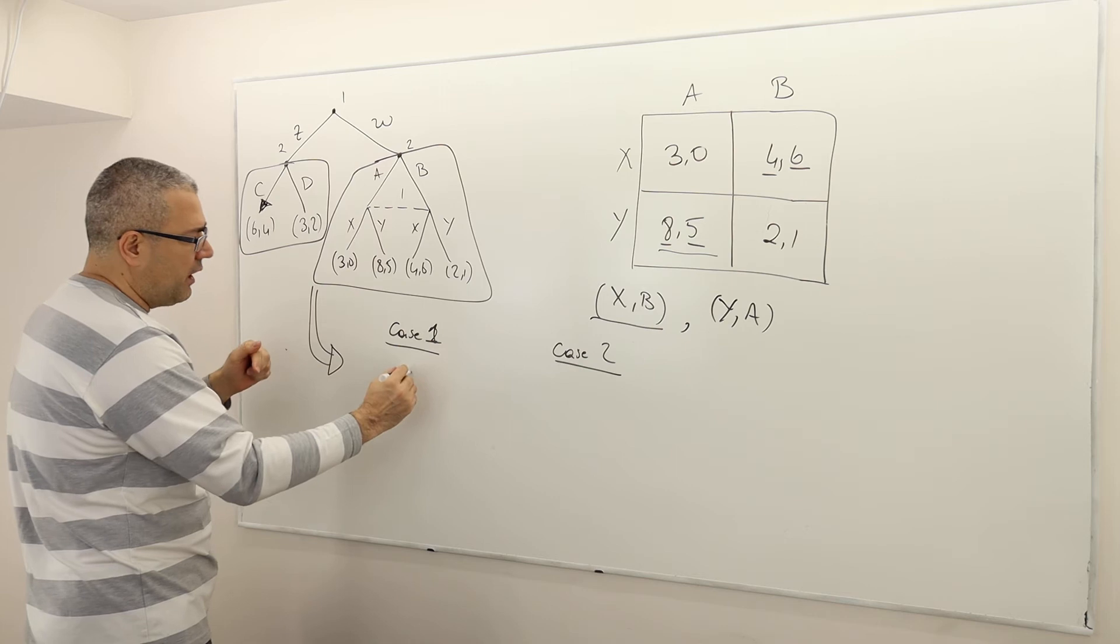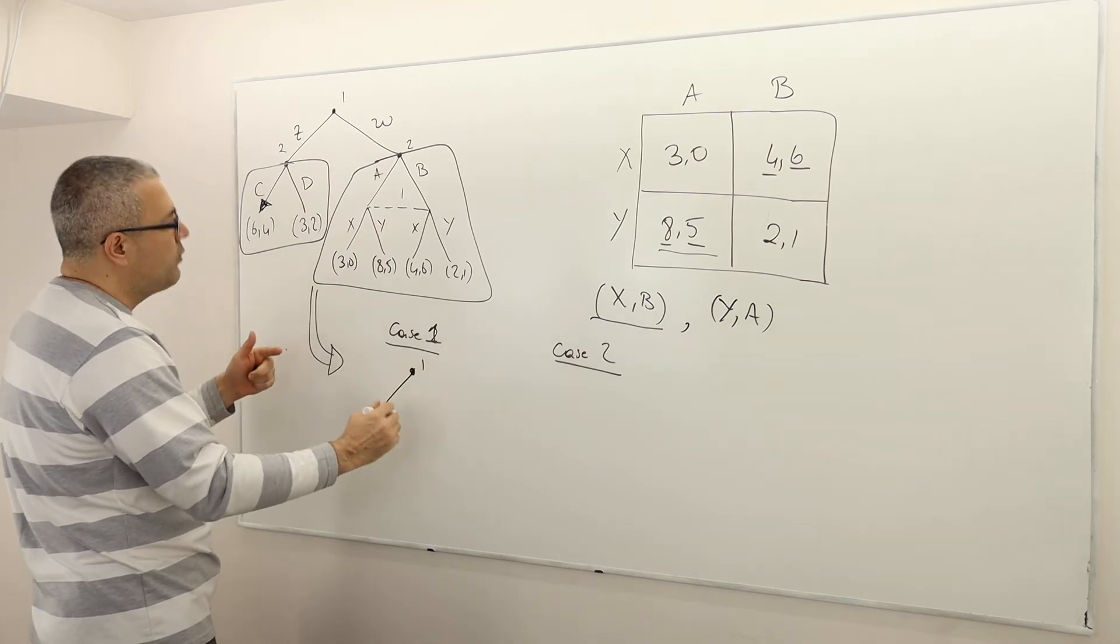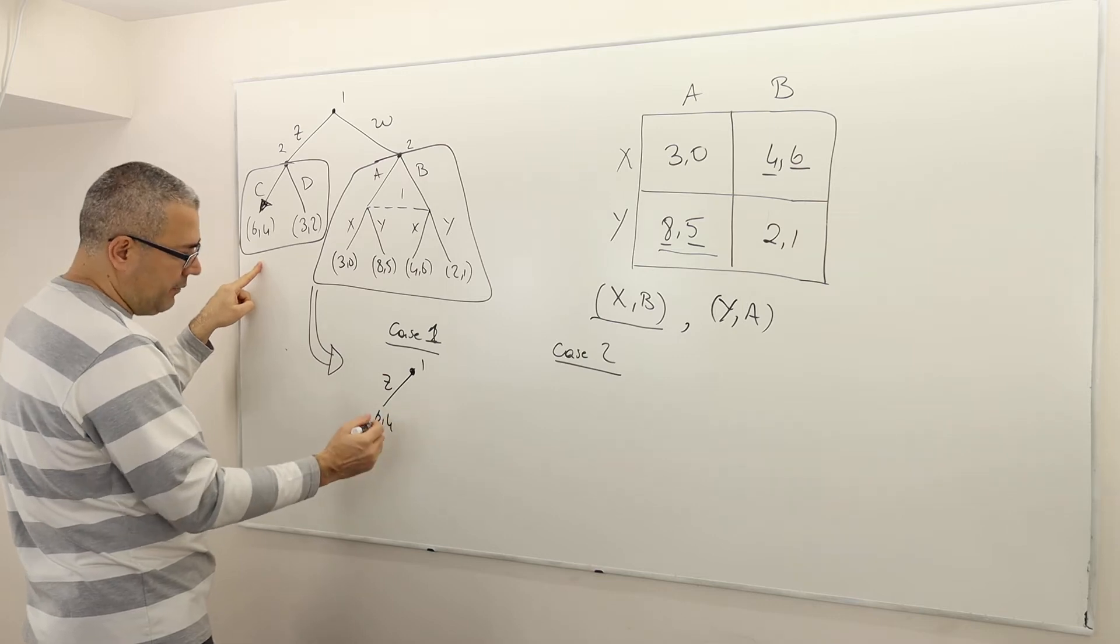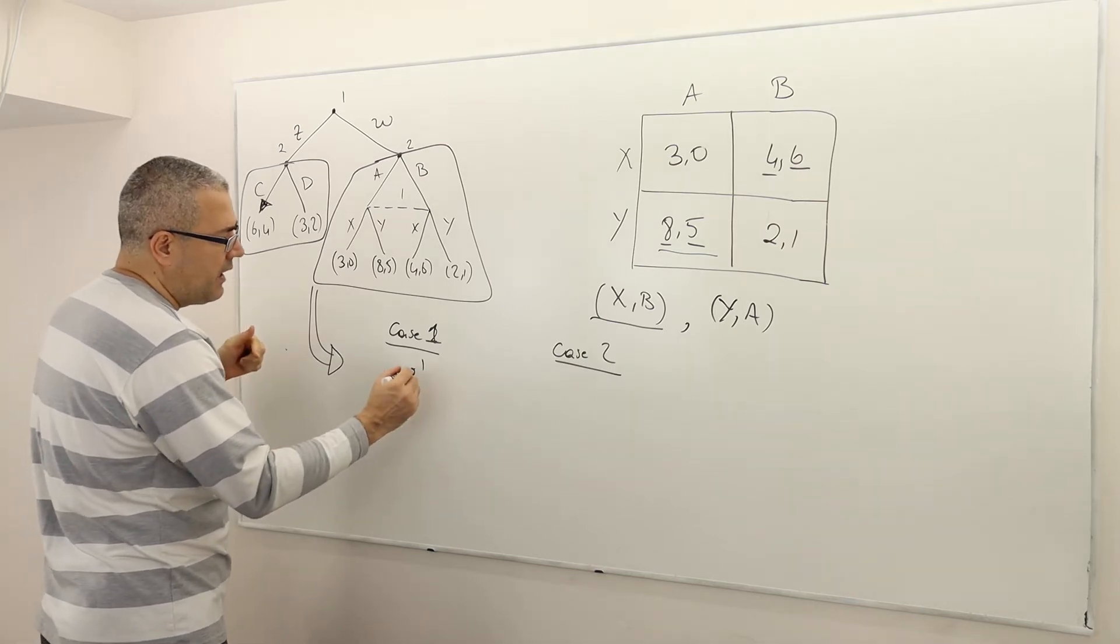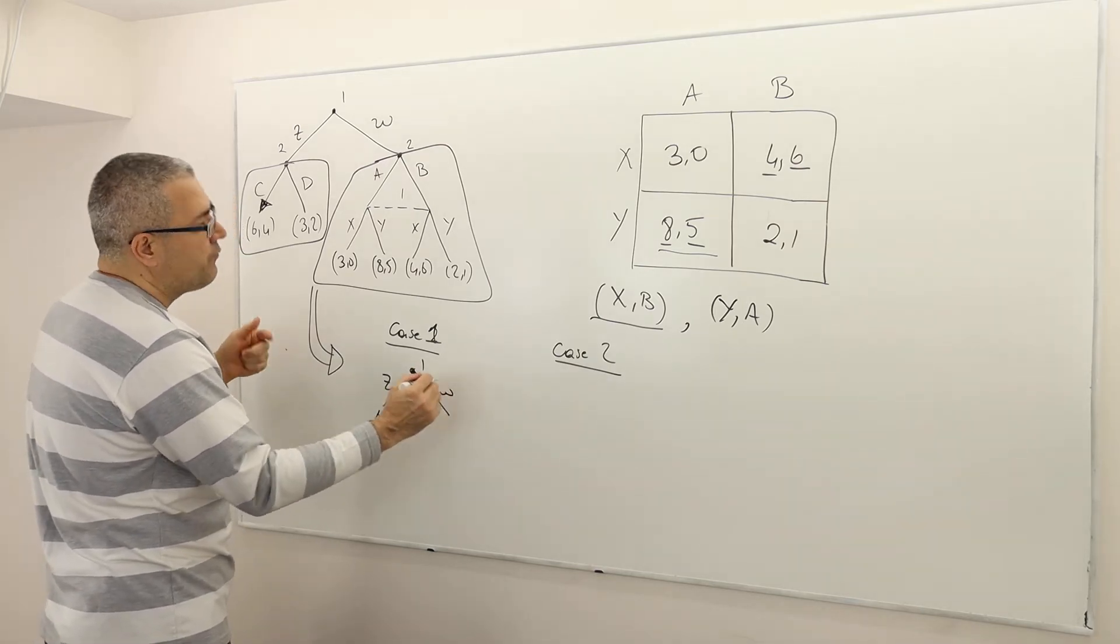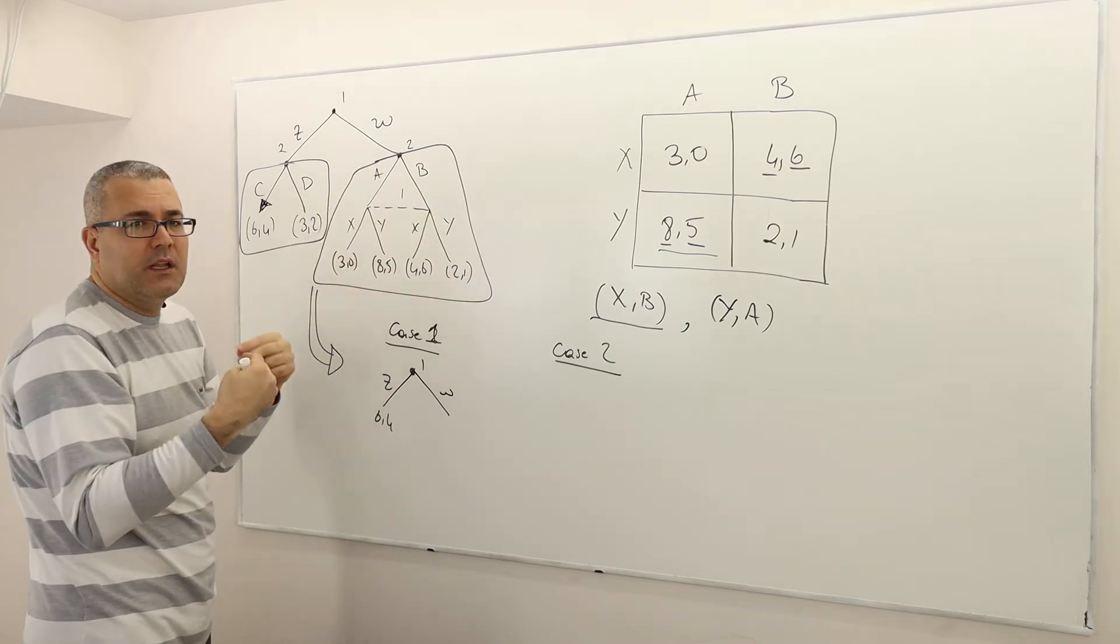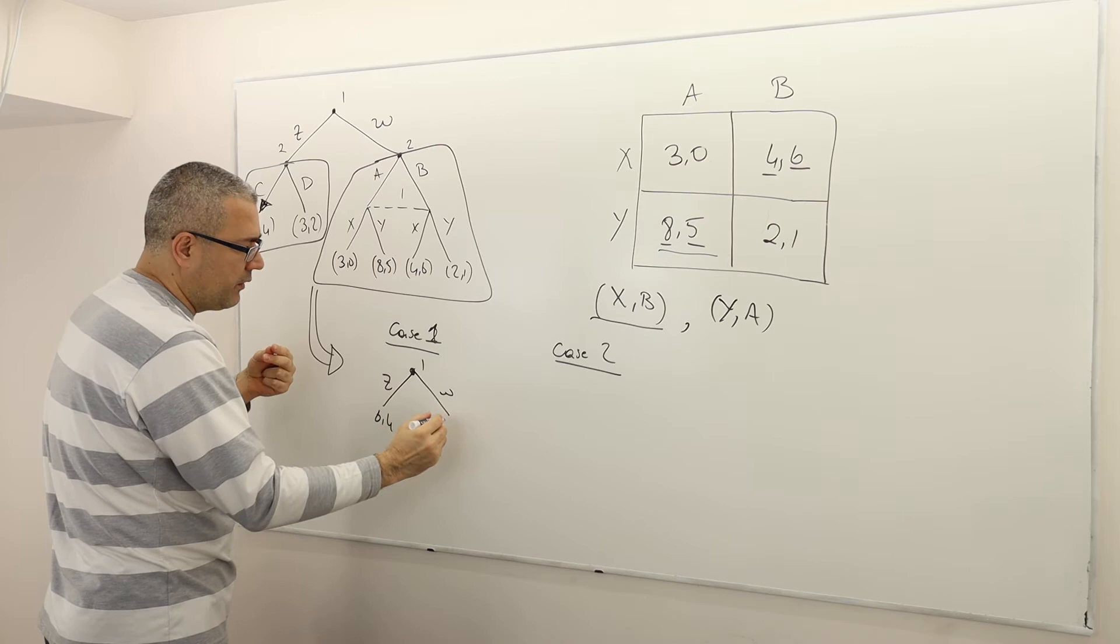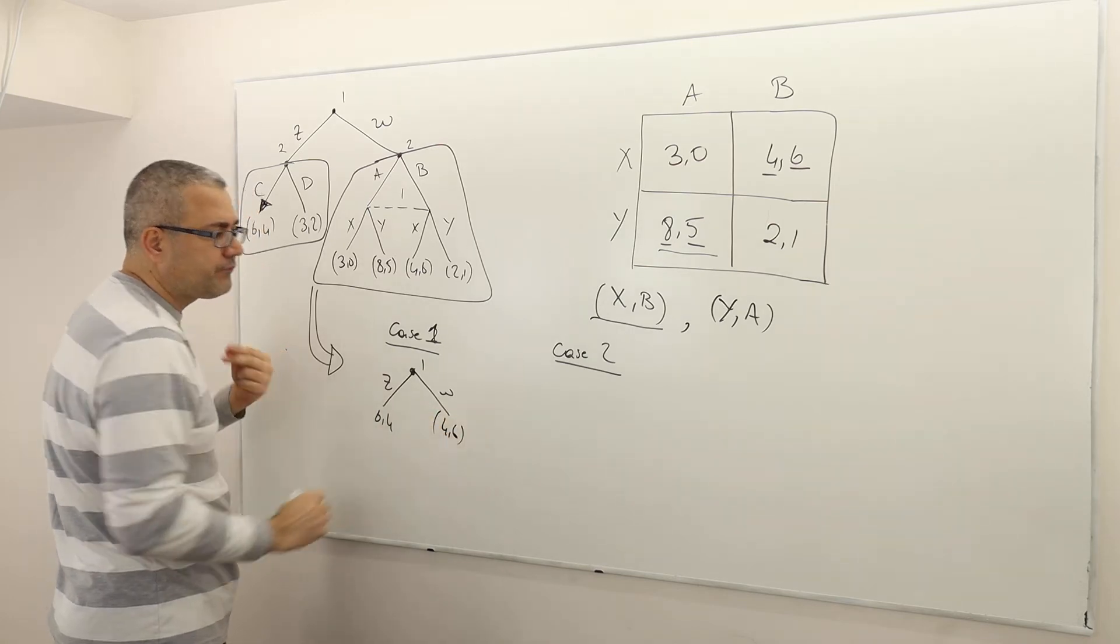So case 1 is the following. Player 1, he moves Z and he knows he's going to get 6,4. Because the opponent is going to play C. And if he moves W, here the optimal outcome is, let's suppose, X,B. And so corresponding payoff is 4,6.